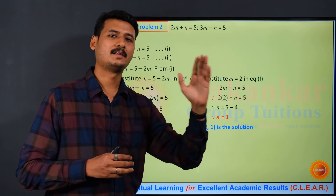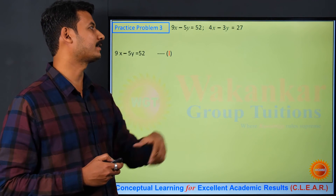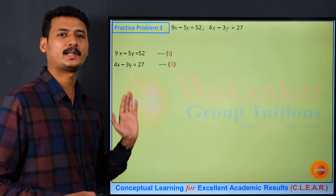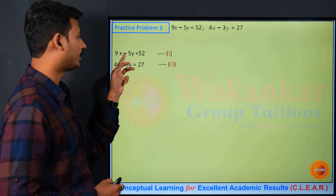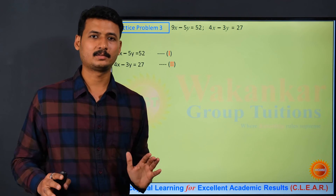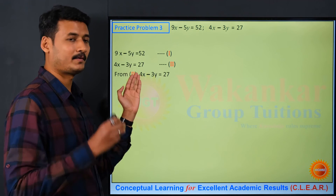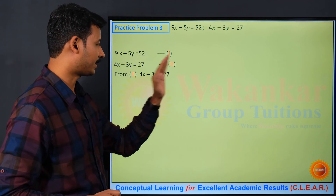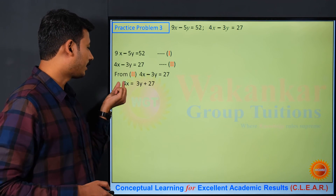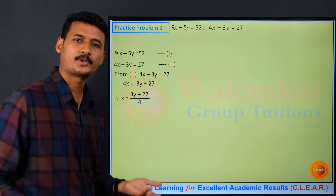Let's take one last practice problem, a more complex one. We have 9x minus 5y equals 52 (equation 1) and 4x minus 3y equals 27 (equation 2). If you observe, none of the variables in either equation has a coefficient of 1 — the coefficients are 9, minus 5, 4, and minus 3. So we do not have an option to avoid the denominator. We will have to accept the denominator and proceed.